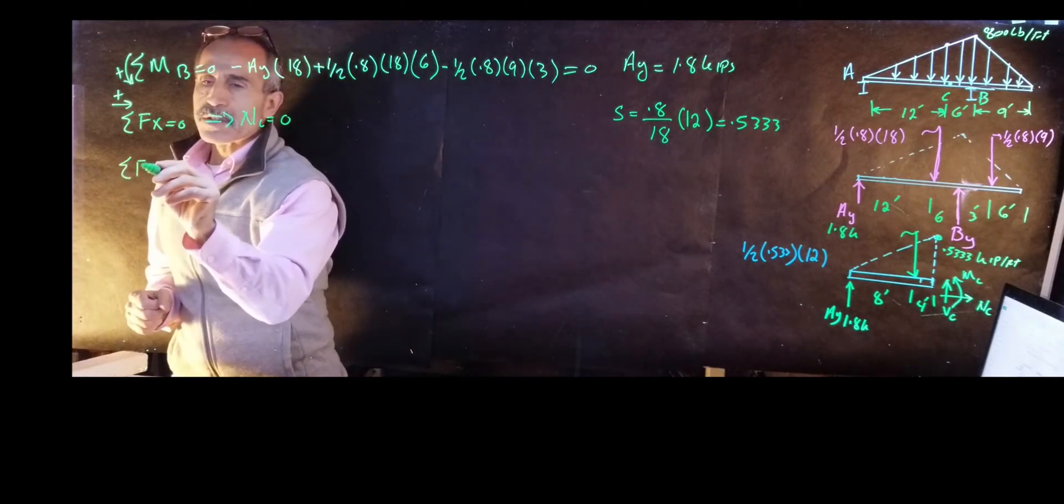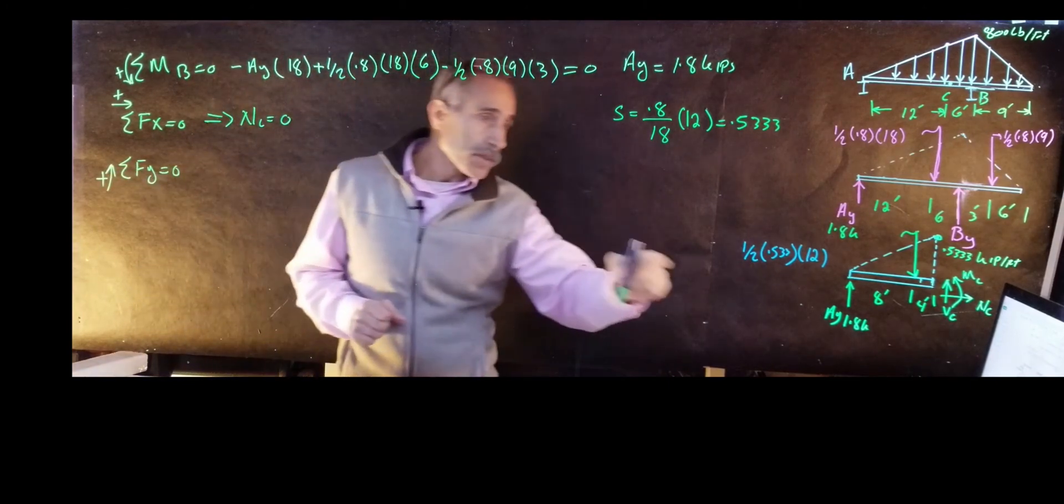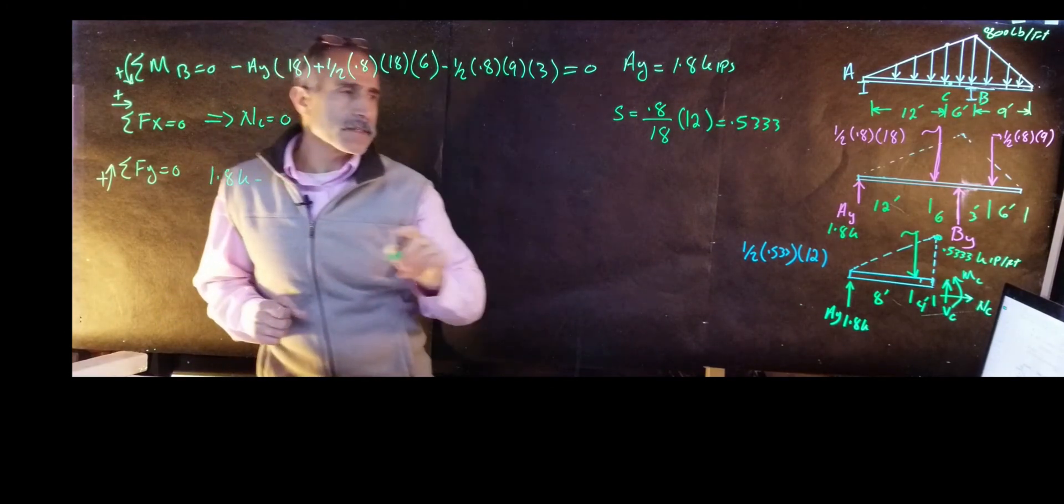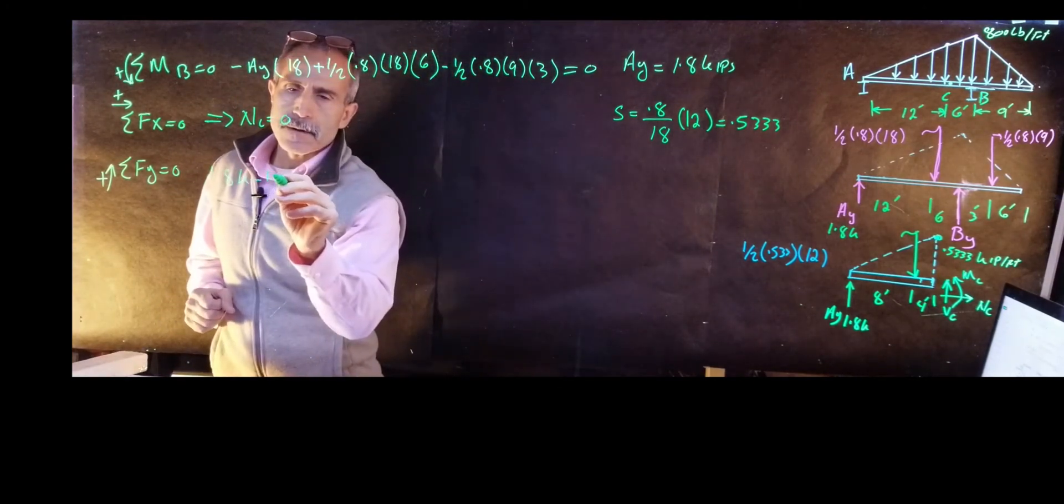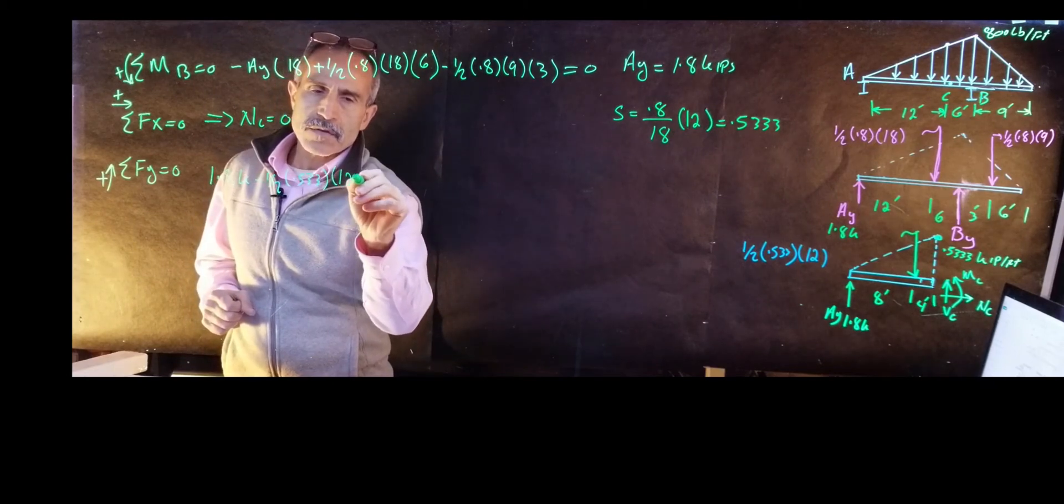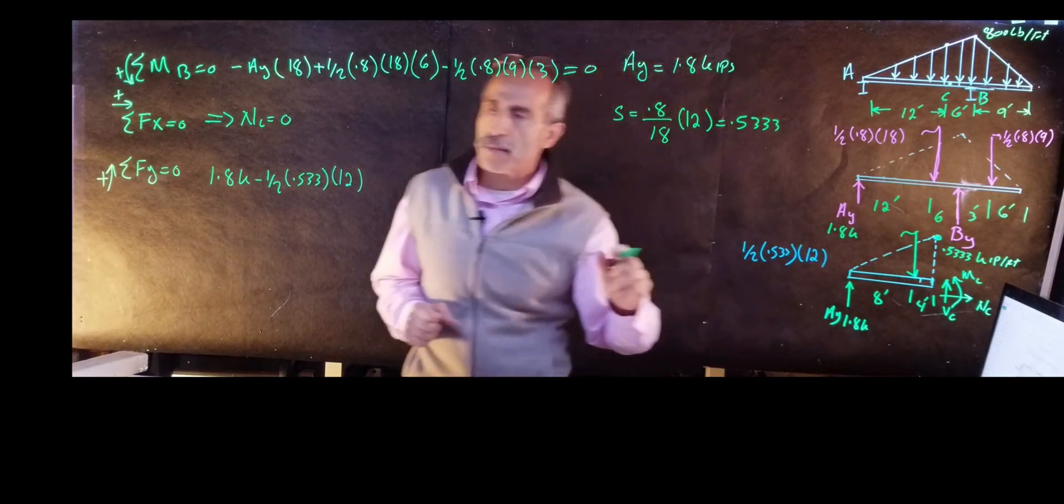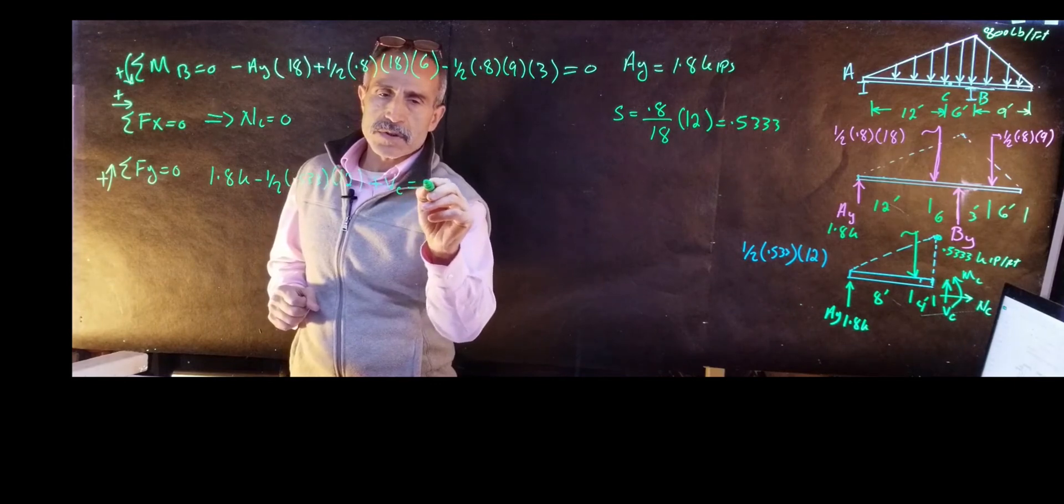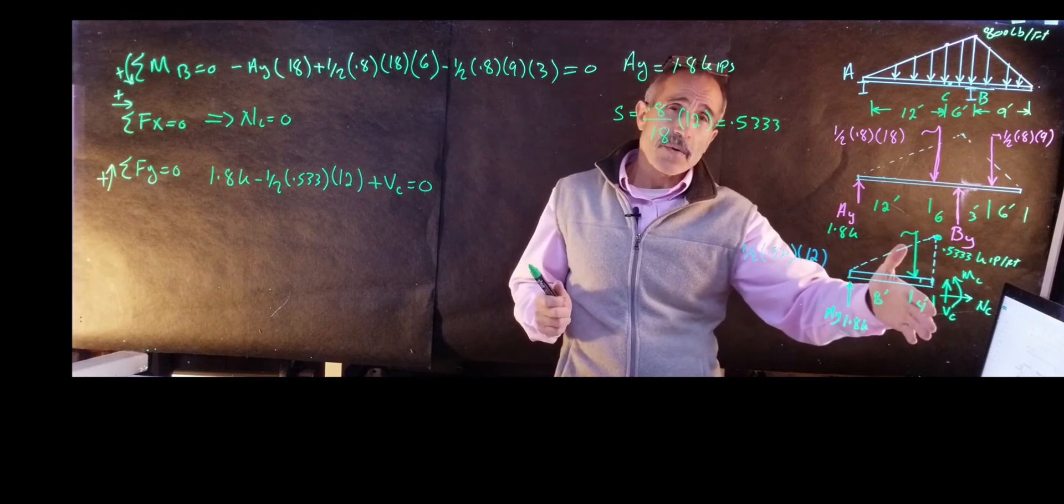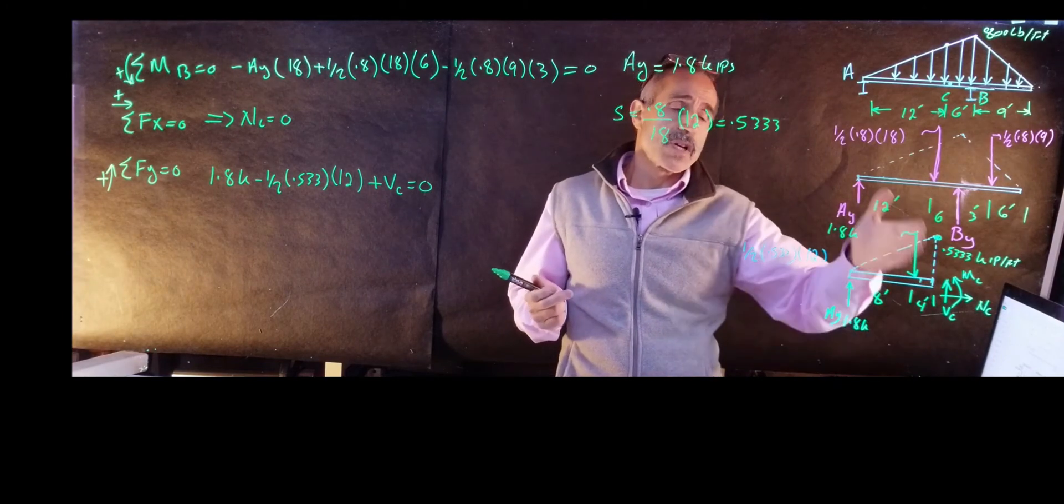Now I do summation Fy is equal zero, going up is positive. I'm going to start from here, I'm going to have 1.8 kips minus one half times 0.533 times 12, and then I assumed the sign going up here, Vc is going up, so it's a plus Vc. Plus Vc equals zero. Remember something, if you had these signs, say you put Vc down, the number comes out negative, then you know your direction was wrong.